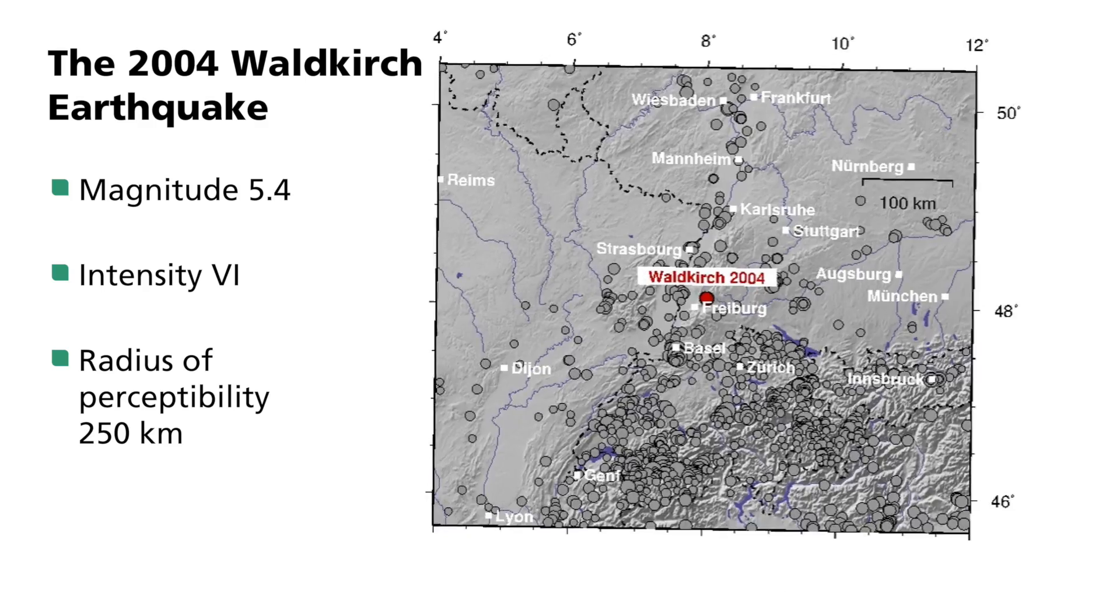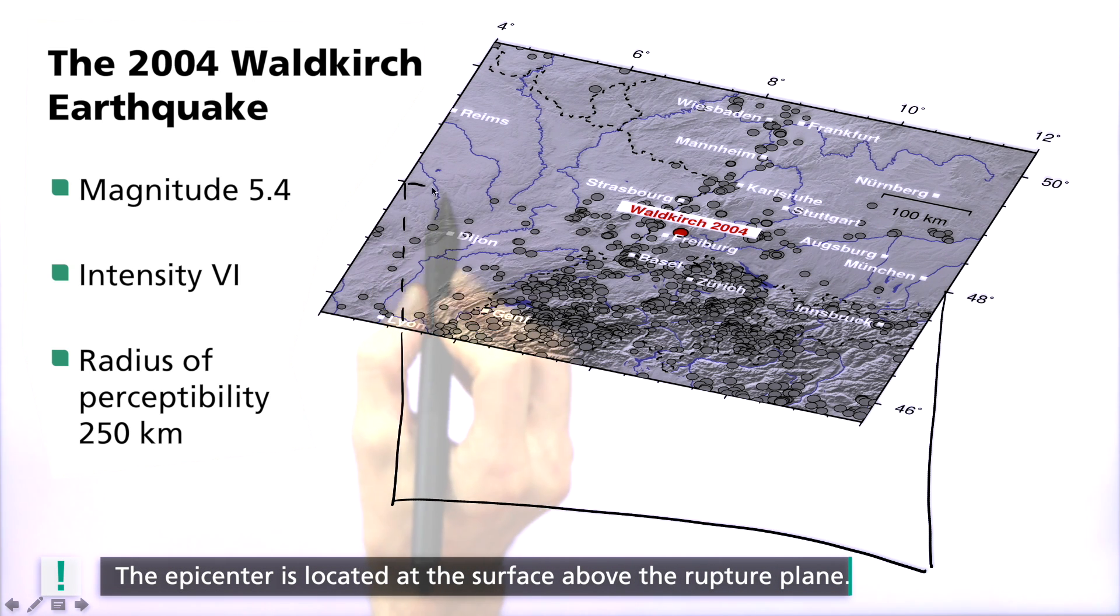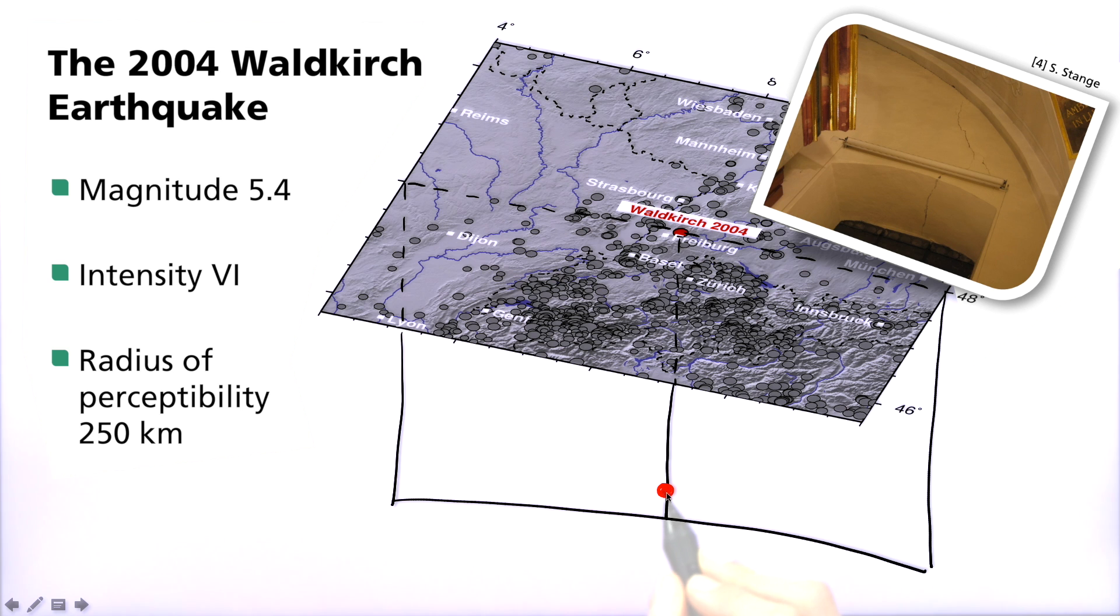Hence, the Waldkirch earthquake was a relatively major seismic event for German standards, one that is experienced by this region only about once every 200 years on average. Now let's talk about the intensity of this rare event. The maximum intensity of an earthquake is experienced in the area around the epicenter. The epicenter is the exact point on the earth's surface, located vertically above the rupture plane, which is underground. In the case of Waldkirch, minor building damage such as cracks in walls occurred, which corresponds to an intensity of 6.